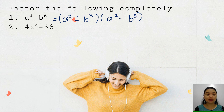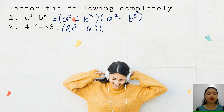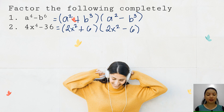What are the factors of 4x squared minus 36? We get the square root of 4x squared, which is 2x, and the square root of 36 is 6. The other factor is also composed of the terms 2x and 6, expressed as sum and difference of the two terms.